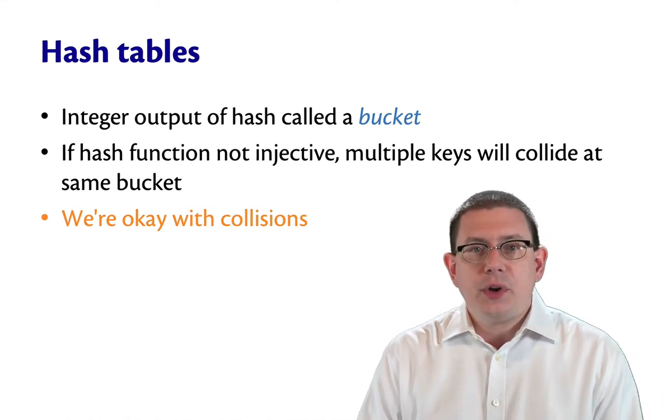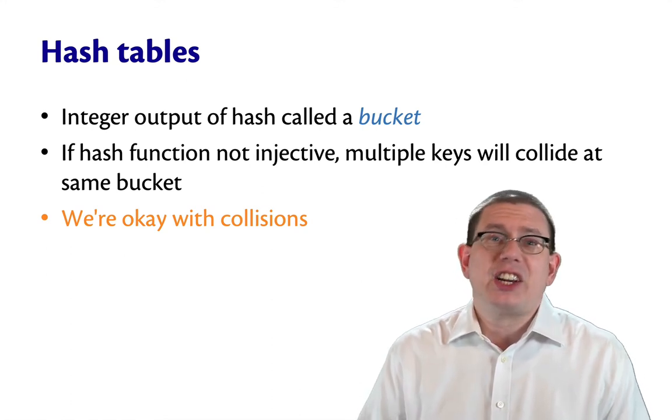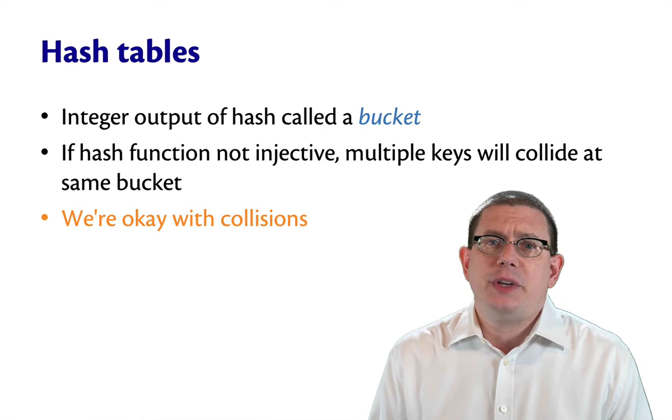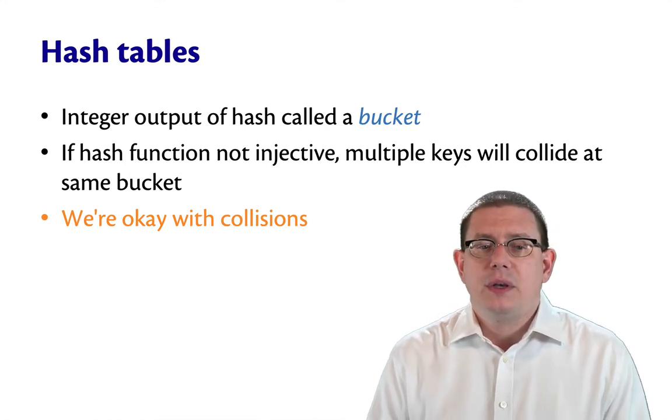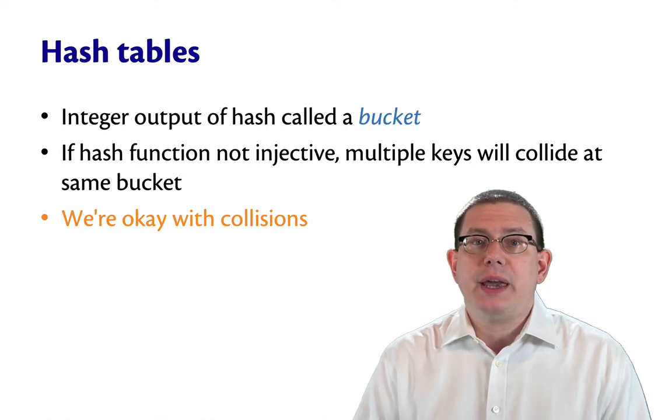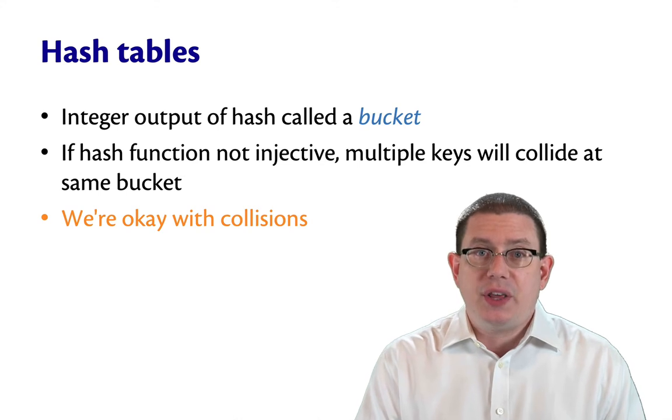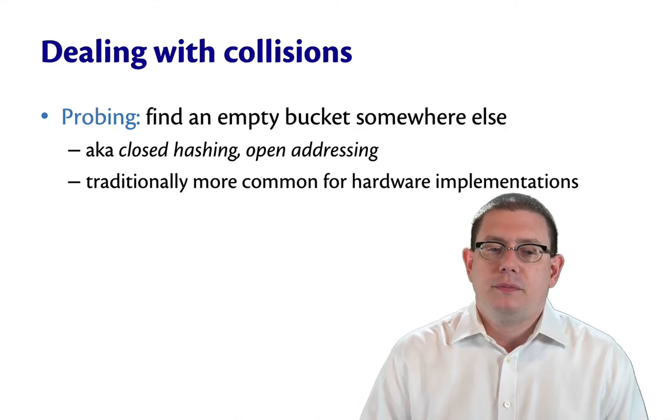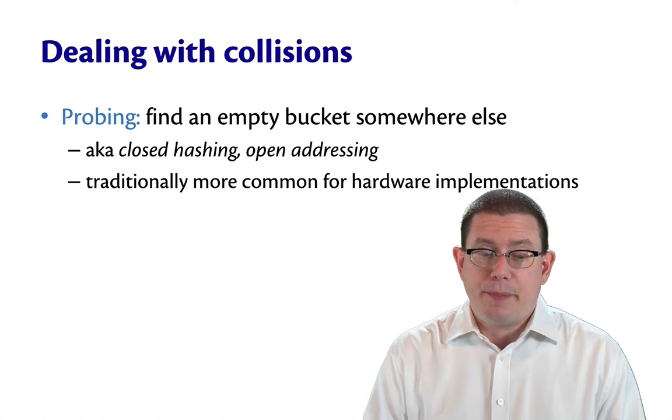So the integer output of a hash is called a bucket. It's a bucket because there's a large collection, basically, of bindings that are going to be stored at that location in the array, instead of just a single binding. So in that bucket, we're going to get multiple keys colliding, potentially. And that's okay. We'll just keep all those collisions there.